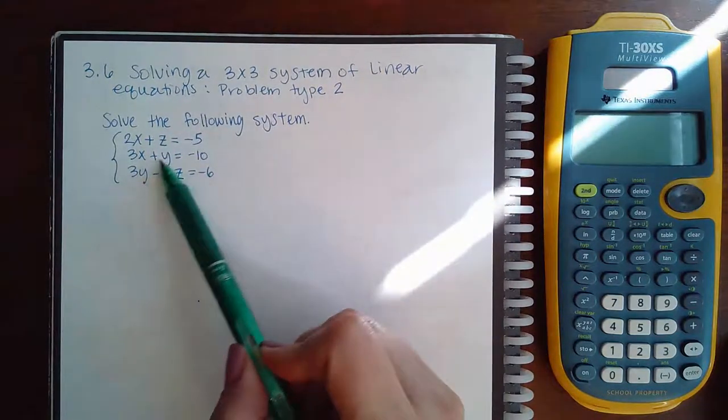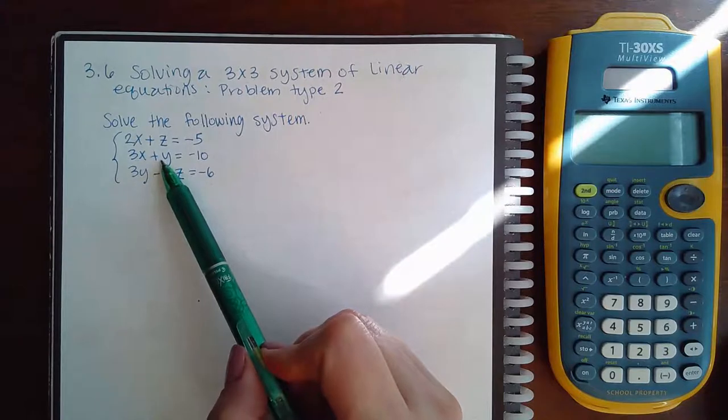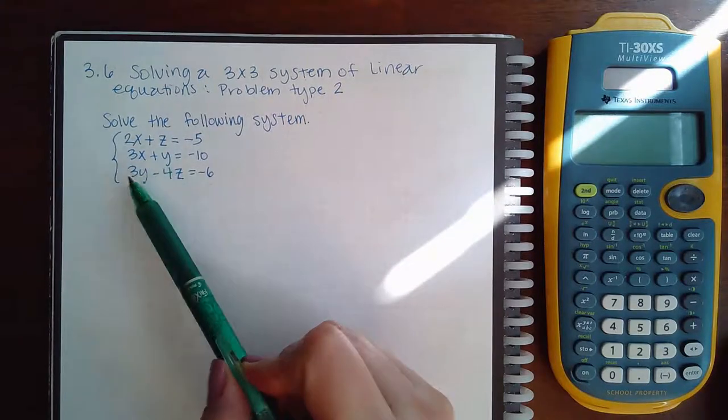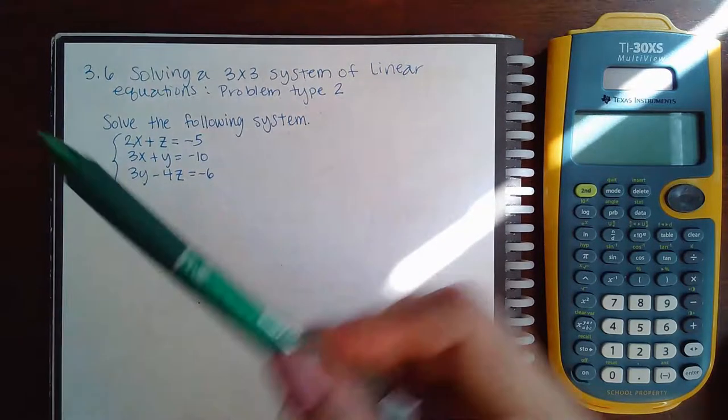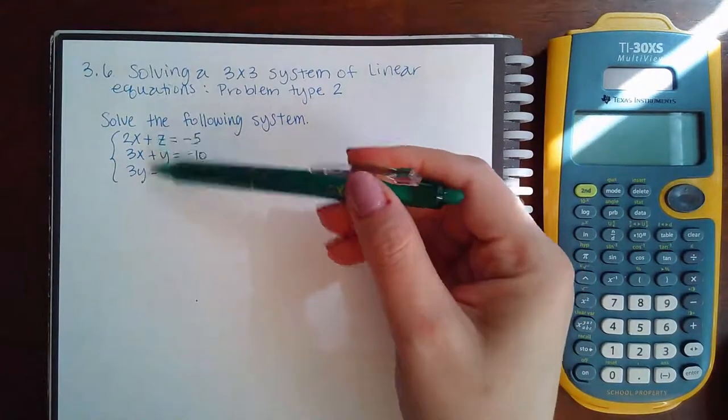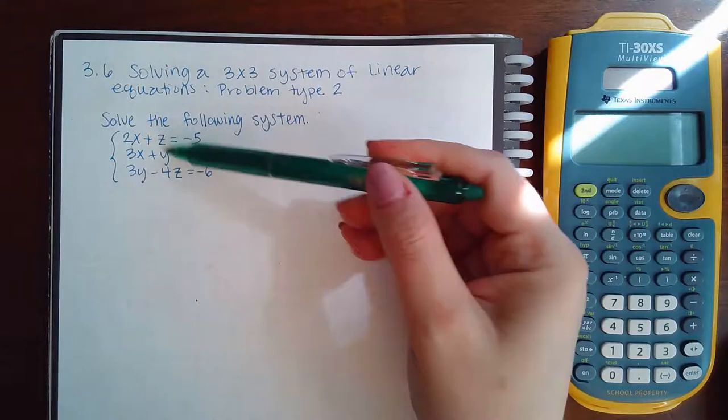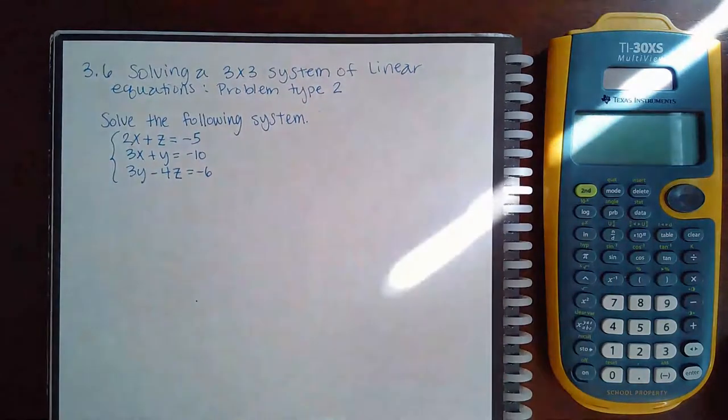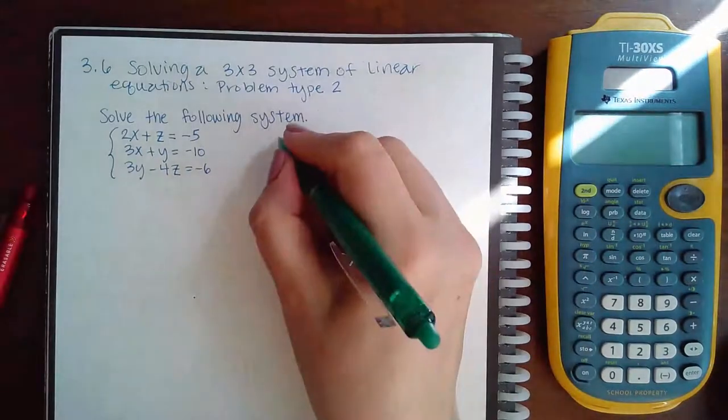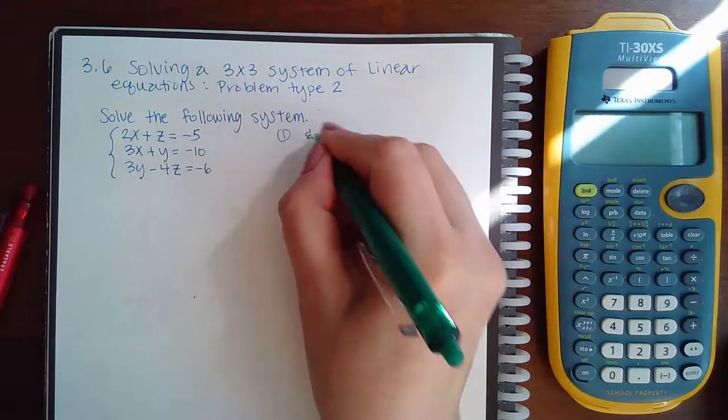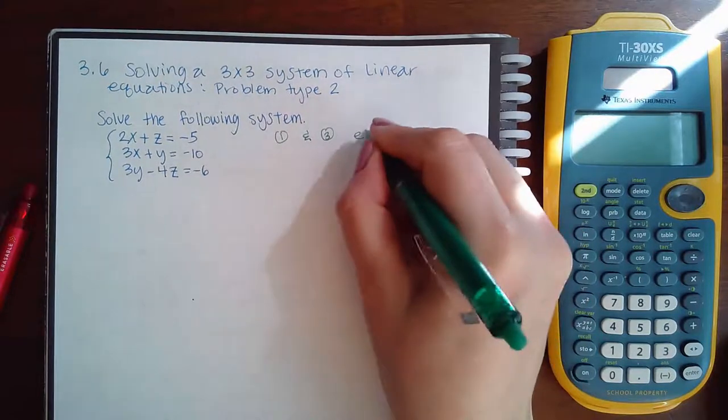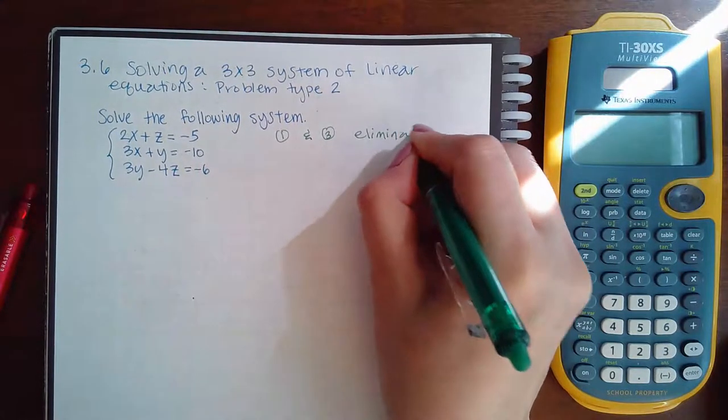Now if I do the y I'm going to have to multiply this equation by negative 3 to get negative 3y and positive 3y, or if I choose to do the z's they're already opposite signs. I just need to multiply the top one by 4 to make it positive 4z. So that's what I'm going to do. I'm going to take equation 1 and equation 3 and I'm going to eliminate z.